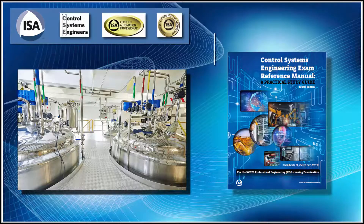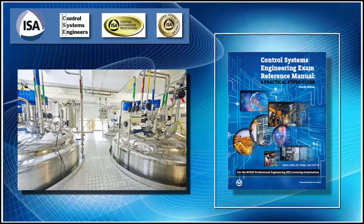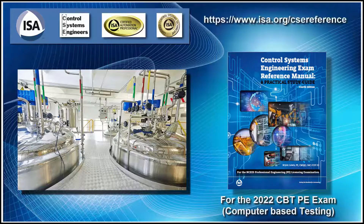This is a video series to accompany my book, The Control Systems Engineering Exam Reference Manual: A Practical Study Guide, which is currently in its fourth edition. It's published by ISA and is the recommended material to study for the NCEES PE Professional Engineers Exam in Control Systems Engineering for the Principles and Practices Exam. We'll be using this book extensively throughout this course, as it is recommended material by ISA and NCEES for this examination.